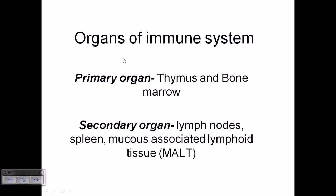Welcome back. In this video we'll be talking about the organs of the immune system, especially the organs where immune cells — killer cells, helper cells, lymphocytes, and myeloid progenitor cells — will develop, and about the homes and training centers where all of them are trained for the purpose of serving our body when pathogens attack us.